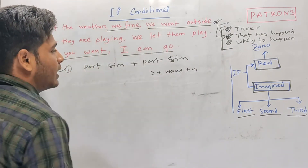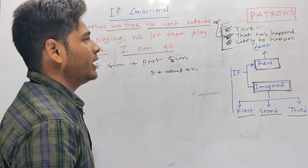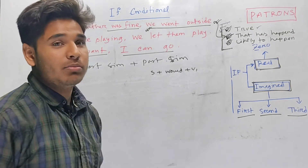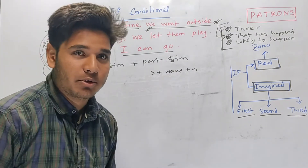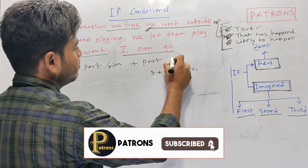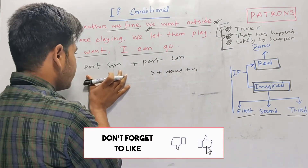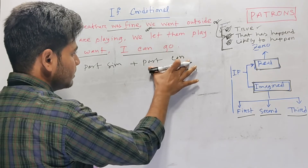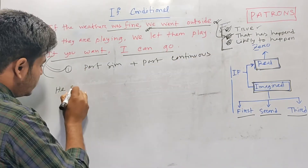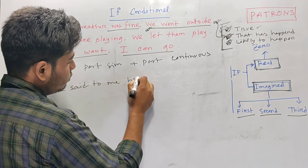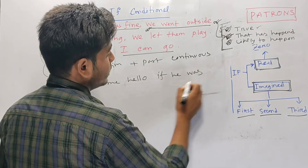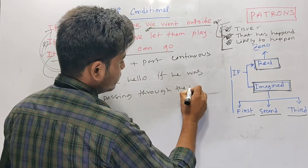Complete — might plus verb. But if you have to see, this expression is the actual condition and is the zero conditional. Now we will modify this expression and write past simple to past continuous. We will have past simple tense and past continuous tense. He said hello to me — if he was passing through the market.